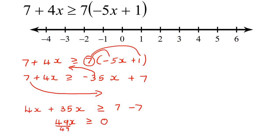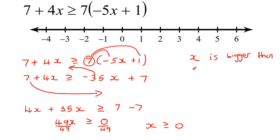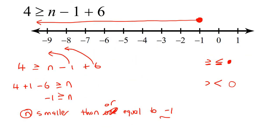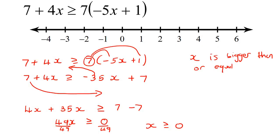To get x by itself, divide both sides by 49, so we end up with x and then 0. Look at the crocodile's mouth — it's facing the x, so x is the big one. We say x is bigger than or equal to 0, because there's a little line there as well. Note: it should say 'or equal to,' not 'and.' So technically, x is bigger than or equal to 0.